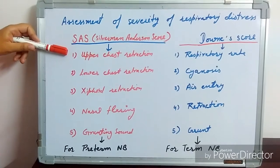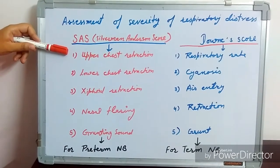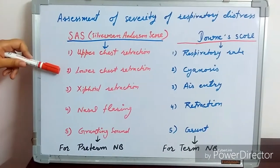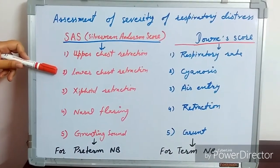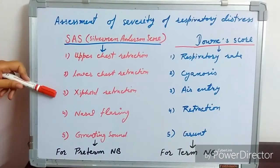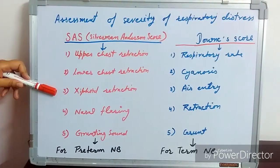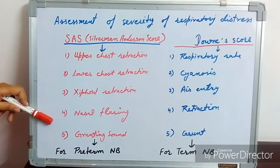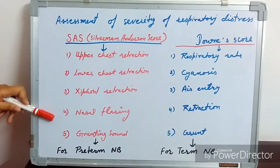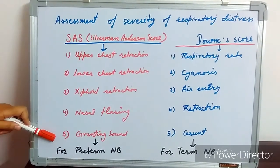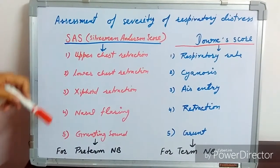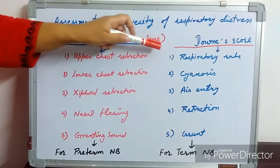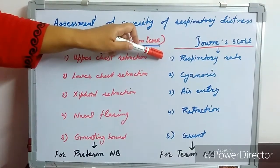In the Silverman-Anderson scoring system, we have to look for upper chest retraction, lower chest retraction, xiphoid retraction, nasal flaring, and grunting sound.